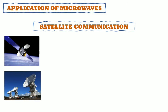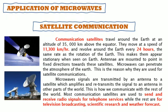The first application of microwaves is satellite communication. Communication satellites travel around the Earth at an altitude of 35,000 km above the equator. They move at a speed of 11,300 km per hour and revolve around the Earth every 24 hours, the same rate as the rotation of the Earth, making them appear stationary when seen from Earth. Not all shining objects visible at night are stars — some are satellites. Microwave signals are transmitted by an antenna to a satellite, which amplifies and retransmits the signal to an antenna in other parts of the world. This is how we communicate with the rest of the world.